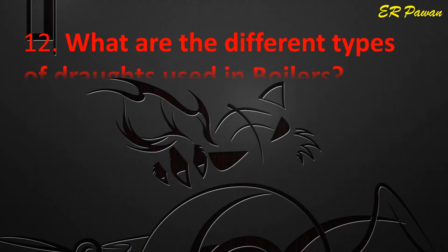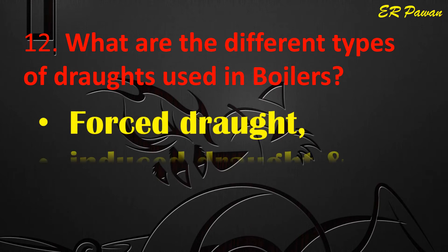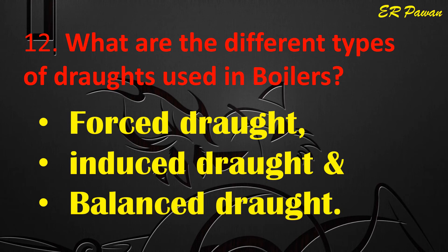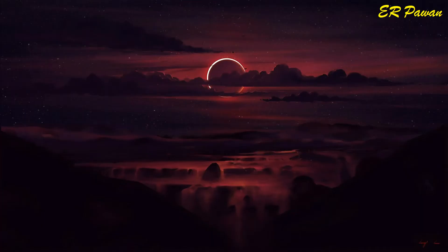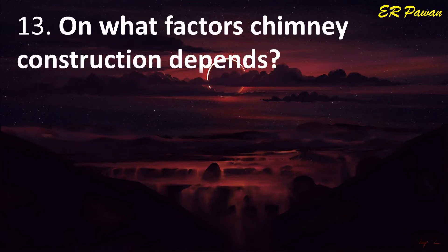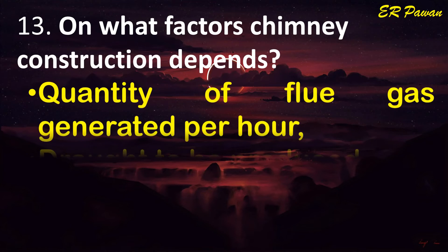Question 12: What are the different types of drafts used in boilers? Forced draft and induced draft. Question 13: On what factors does chimney construction depend? The quantity of flue gas generated per hour.